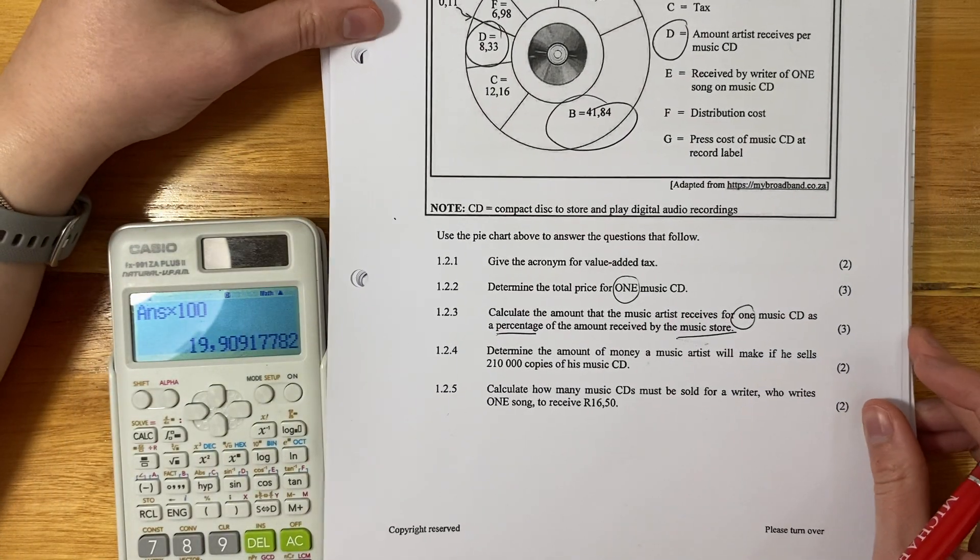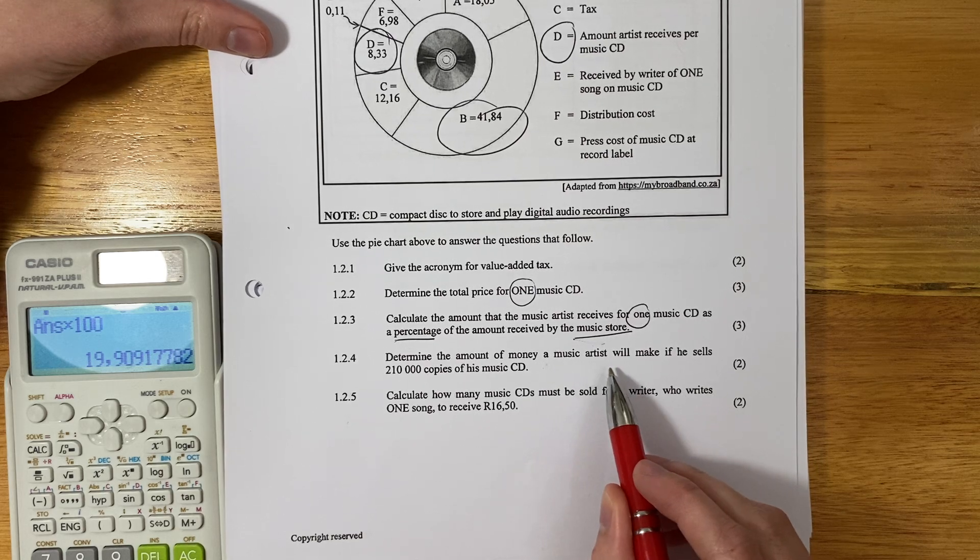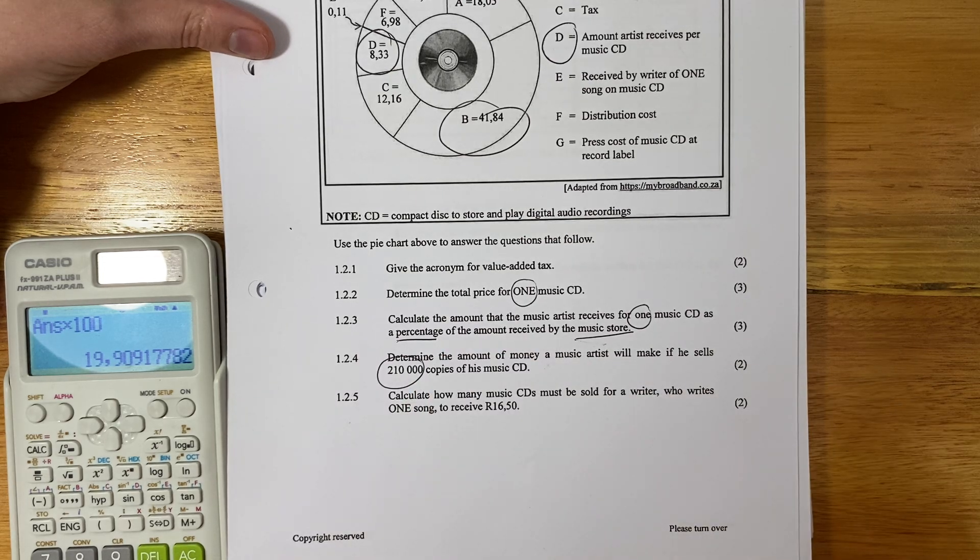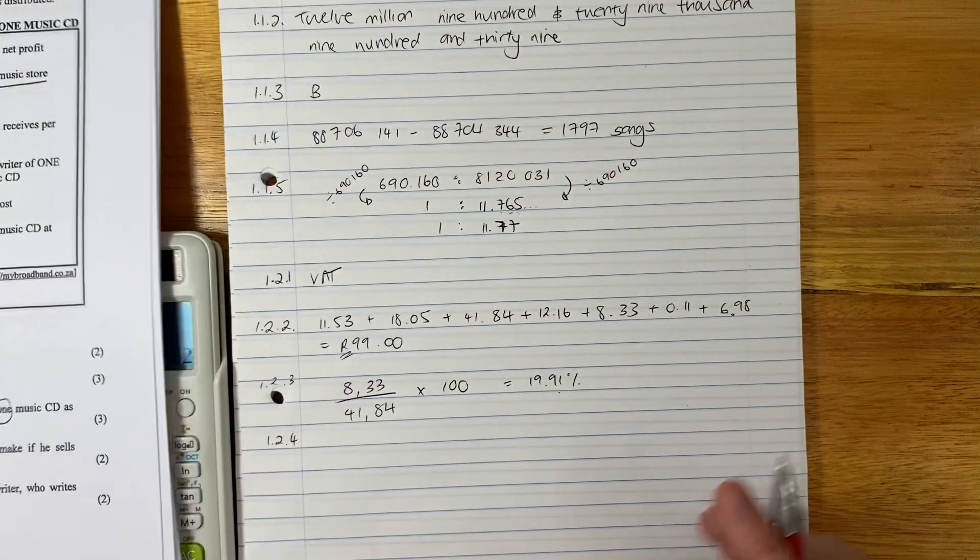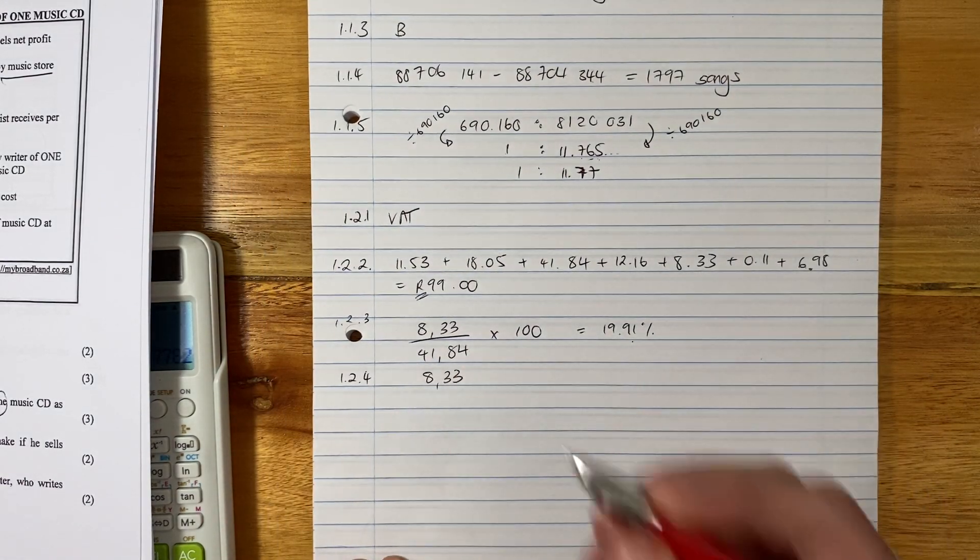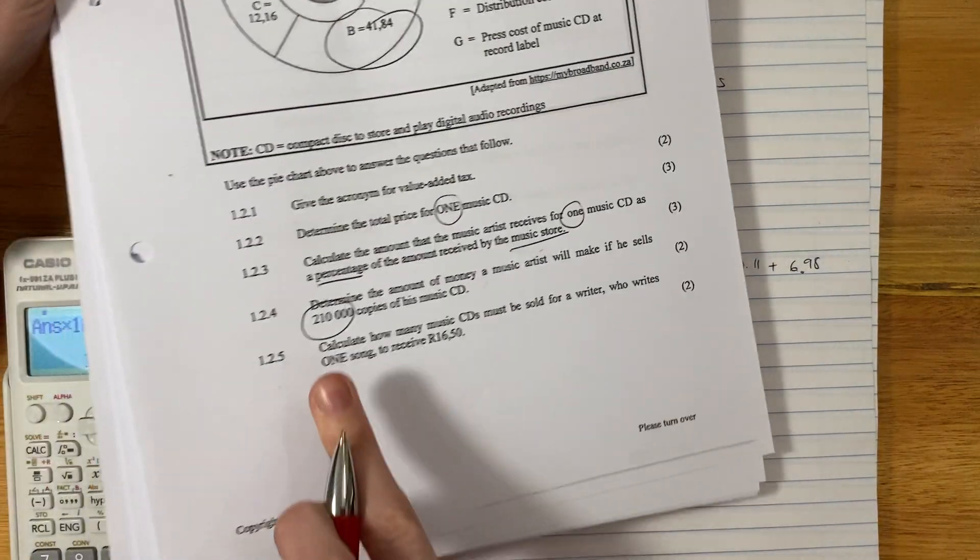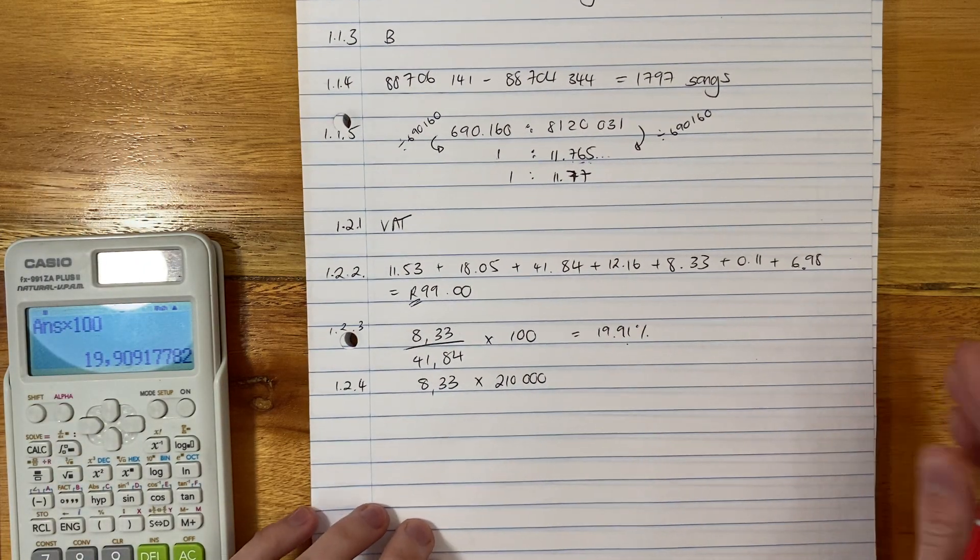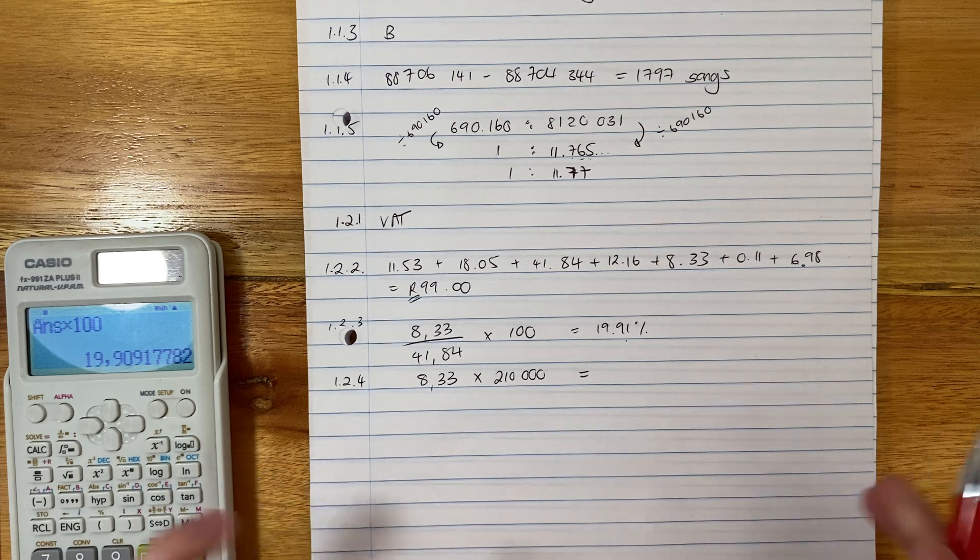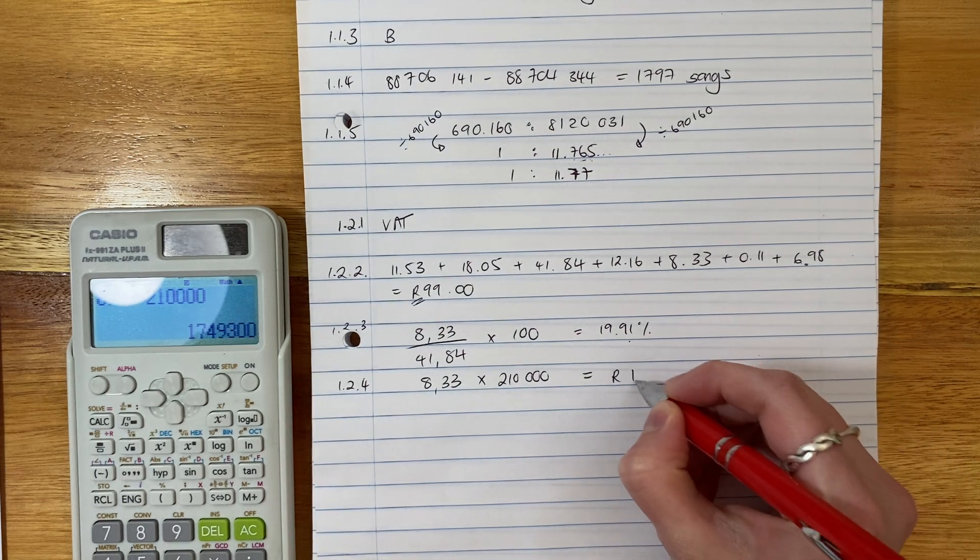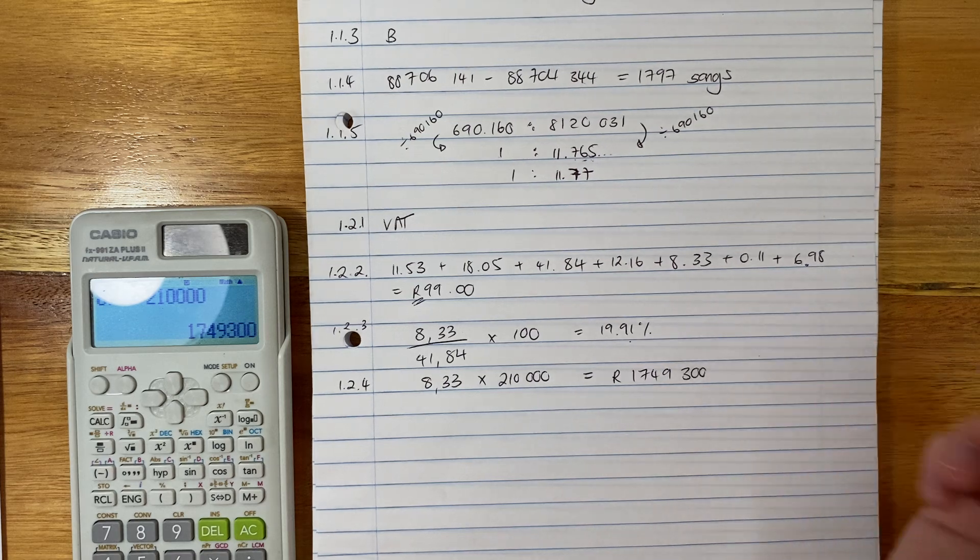Let's continue. Here's where it's getting a little bit trickier. So it says, determine the amount of money a music artist will make if he or she sells 210,000 copies of his music CD. So we know that per album, they make this, right? And then it says, how much are they going to make if they sell this many copies? So you have to say that amount times the number of copies they sell. That's quite important, because you're basically saying per unit and then the number of units. Very common question in math lit. Make sure you type that in correctly. Great. Don't forget your rand sign. And you are done.